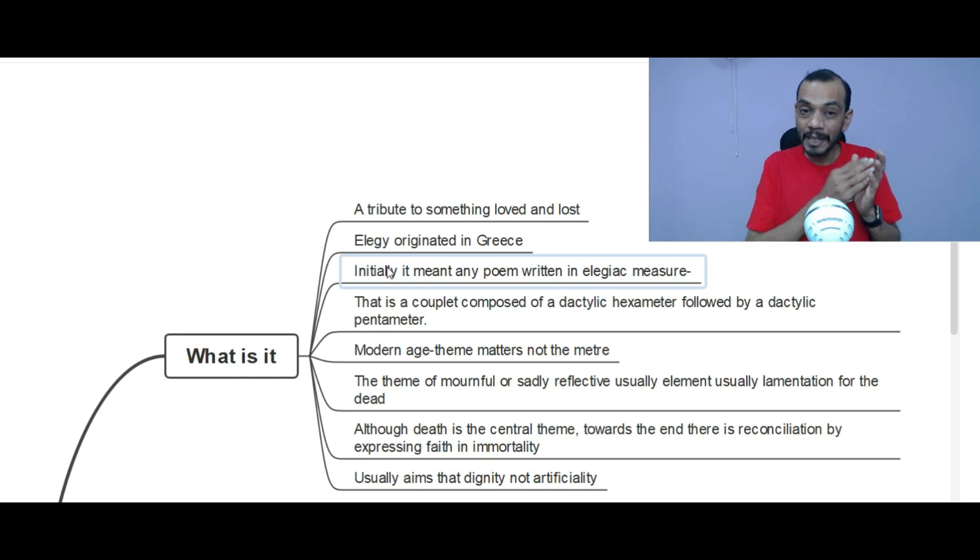It has nothing to do with death or anything. Elegiac measure is a couplet written with dactylic hexameter followed by dactylic pentameter. Hexa, six feet, penta, five feet. Dactylic is a foot. It has got one long stress followed by two short stress, which we will discuss in another part when we deal with prosody.